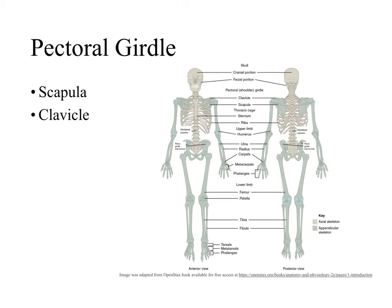Now that we covered all the bones in our upper limb, we can look at the bones that attach our upper limb to the axial skeleton. These bones are referred to together as the pectoral girdle, sometimes also called the shoulder girdle, because they are the bones found in our shoulder. The bones are the scapula and clavicle. The clavicle is anterior — we can palpate the entire length of it — and the scapula is posterior.